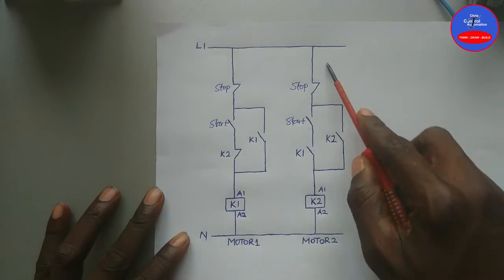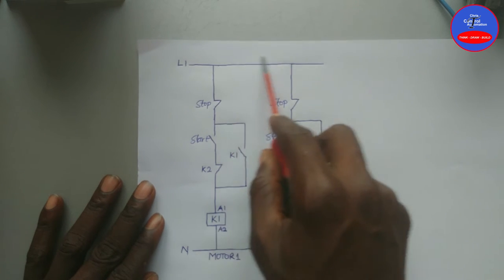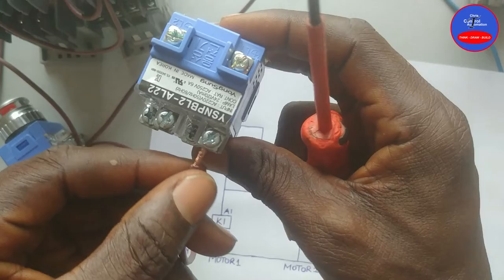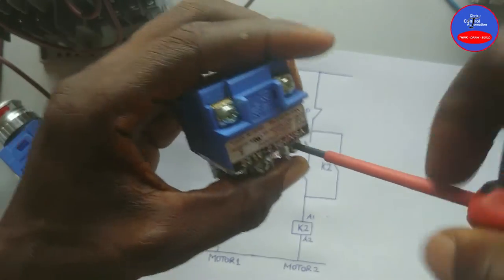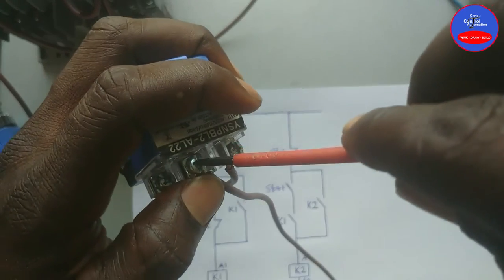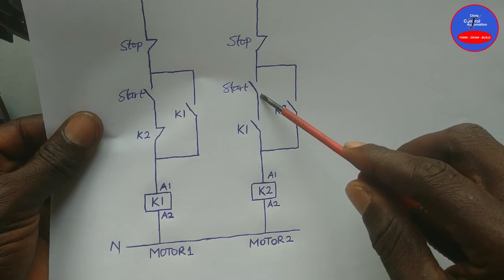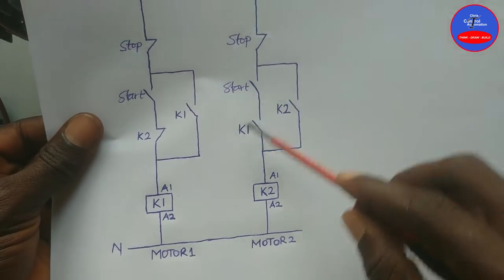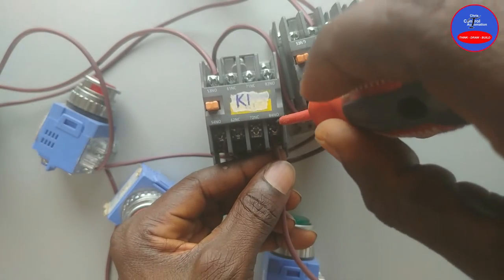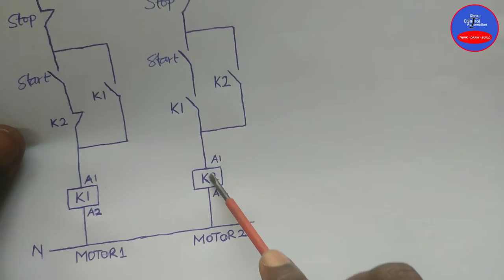We are done with Motor 1. For Motor 2, we tap from Line 1 or from the input of Motor 1's stop button to Motor 2's stop button input. From the other side of the stop button it goes to one side of the start button. From the other side of the start button it goes to one side of the open contact on K1, and from the other side of the open contact on K1 it goes to A1 of K2.